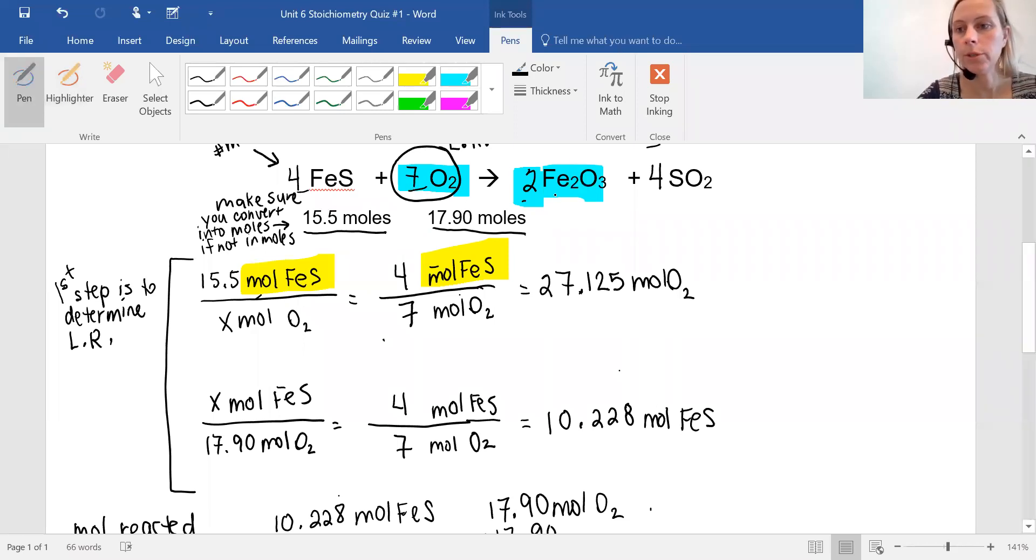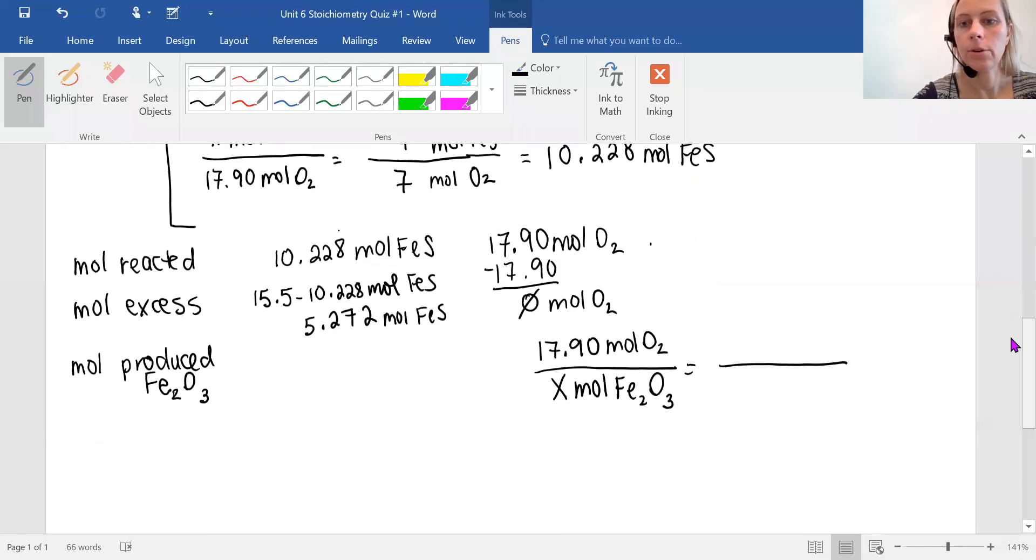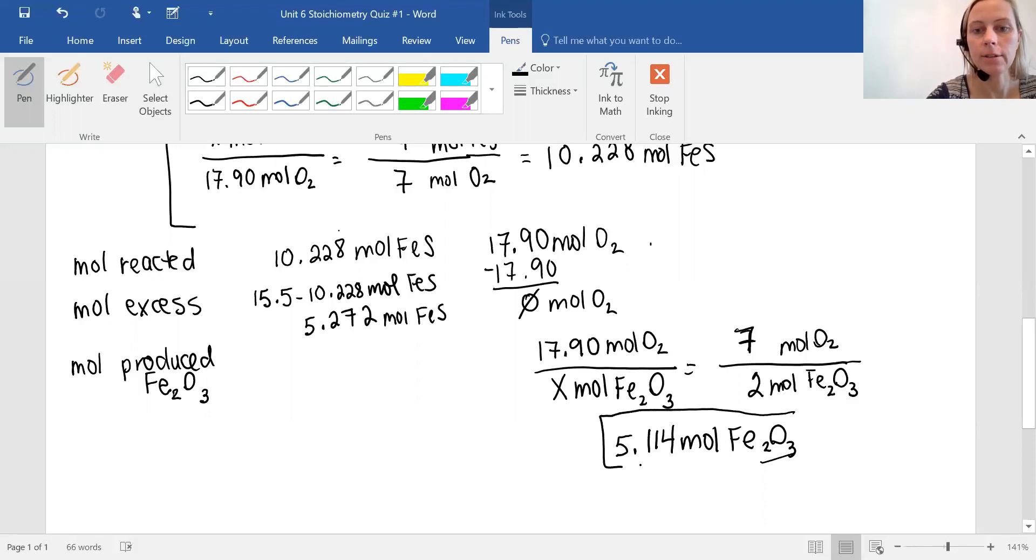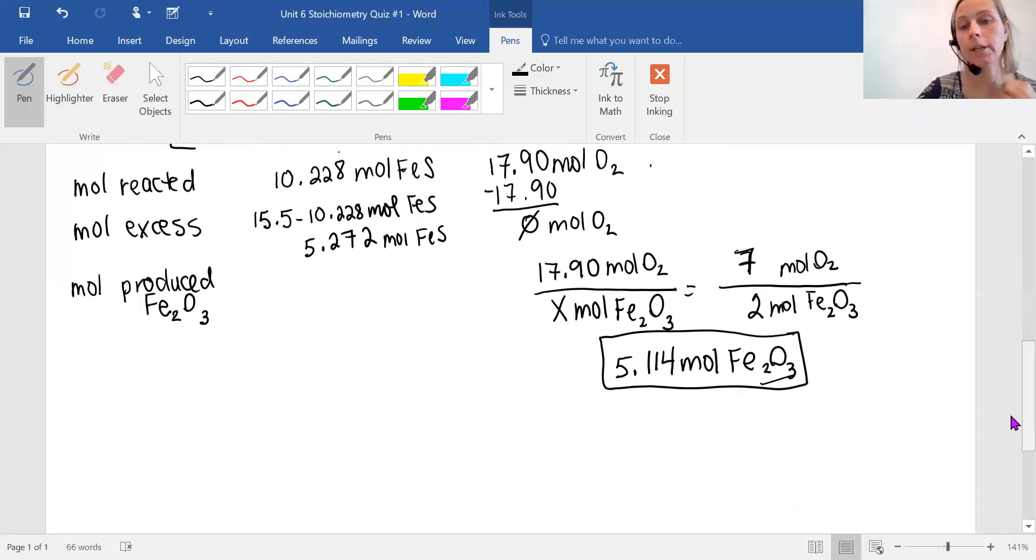So I know my moles of oxygen must be on top because the proportion mathematically needs to be set up here. So I can put seven moles of oxygen on top. And then I'll put two moles of my iron 3 oxide. Mathematically, now I take that 17.9 multiply by two and divide by seven. And I get an answer of 5.114 moles of iron 3 oxide. I've asked you to box in your final answer, which is the amount of moles that were produced. And that's the solution. I didn't ask you for sulfur dioxide. I've only asked you for the moles of iron 3 oxide.